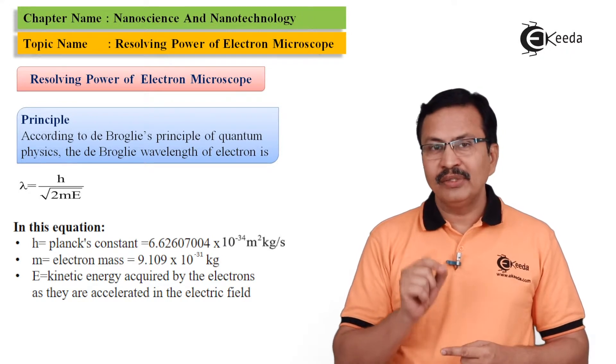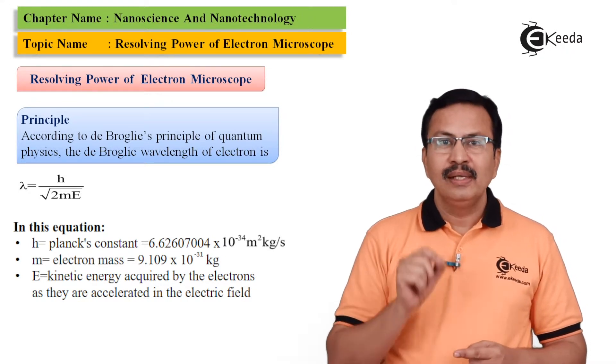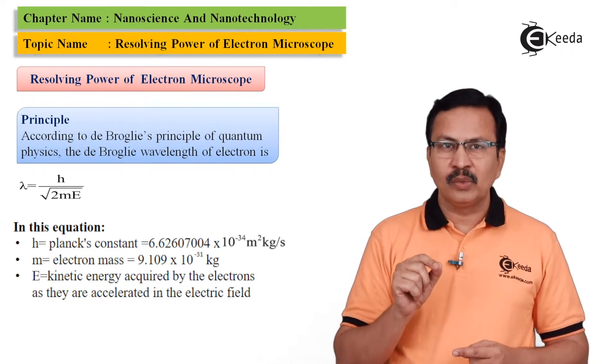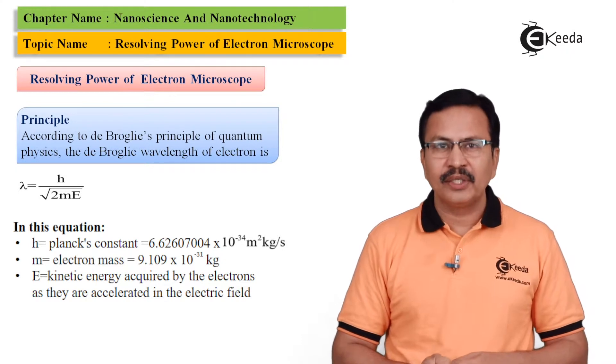The second quantity is m, wherein we are dealing with electrons. So this is going to be the mass of the electrons, and m = 9.1 × 10⁻³¹ kg.